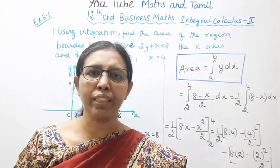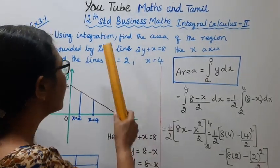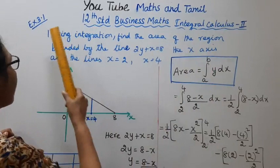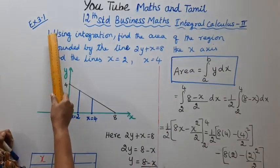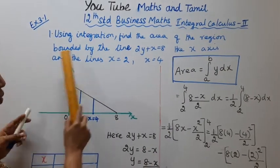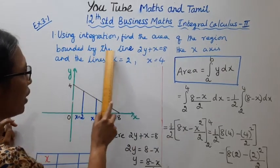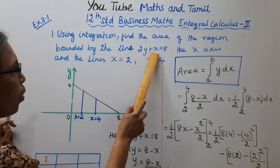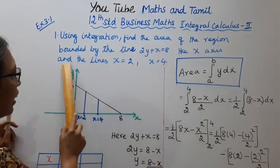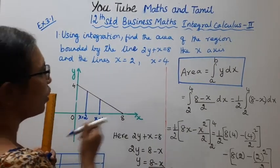Hello students, welcome to Max and Tammet channel. 12 standard business math integral calculus 2. Exercise 3.1 - using integration, find the area of the region bounded by the line 2y plus x equal to 8, the x-axis and the lines x equal to 2 and x equal to 4.